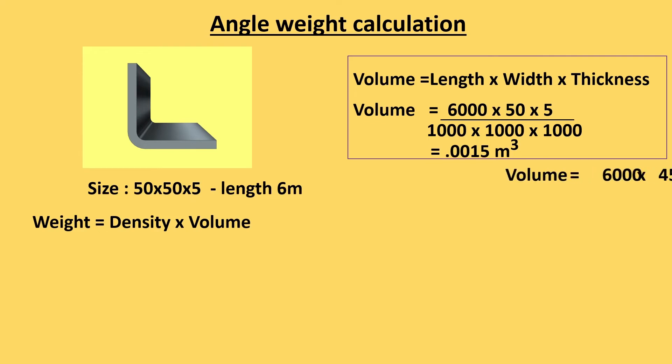Now we will calculate the volume for the horizontal rectangle. Here one interesting thing is that the width of the horizontal plate is 45 as 5 already counted in rectangle A.